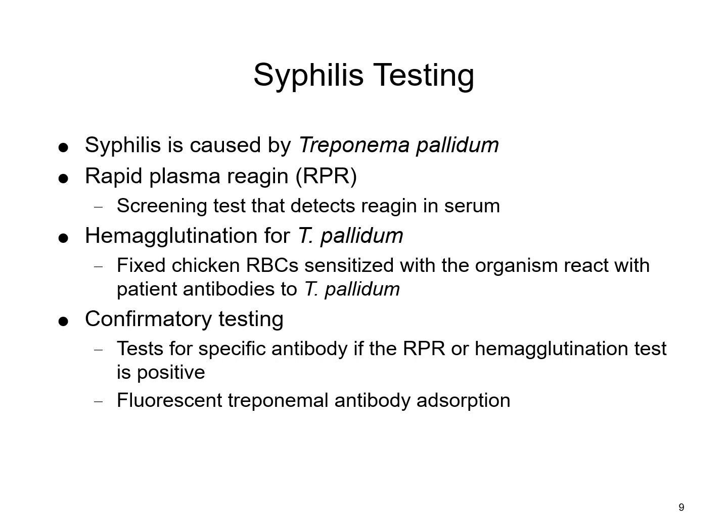Syphilis testing is performed looking for Treponema pallidum. This can be done using RPR screening, though most places have moved away from RPR due to a high rate of false positives, or hemagglutination for T. pallidum. With either method, if positive, a confirmatory assay must be performed — specifically the fluorescent treponemal antibody absorption test.